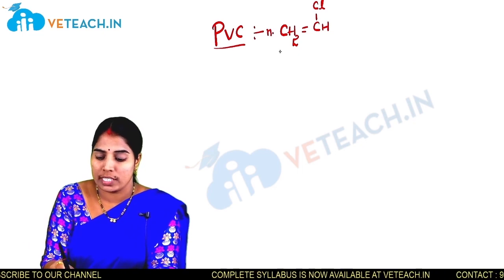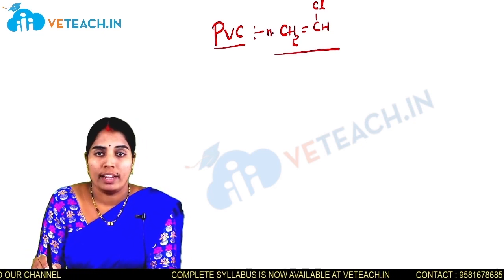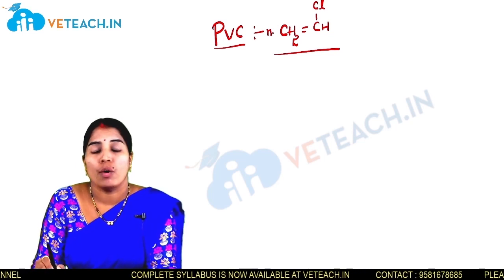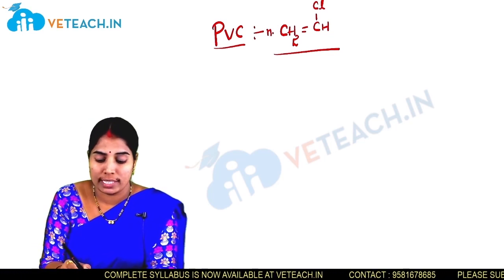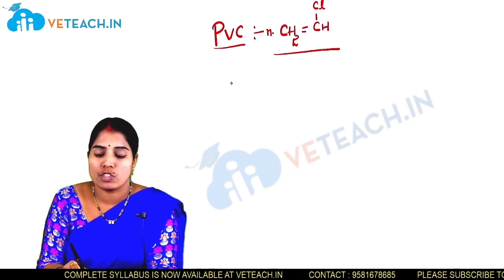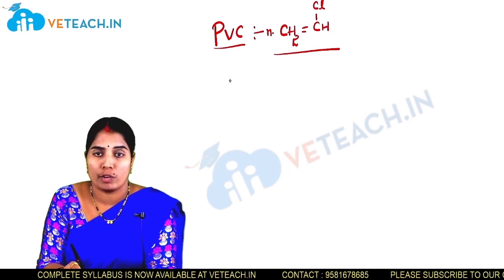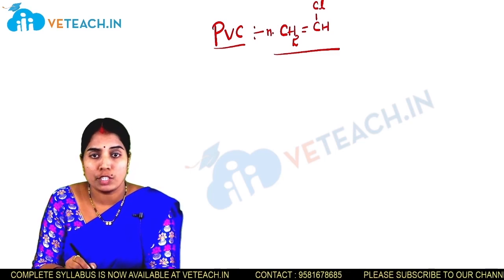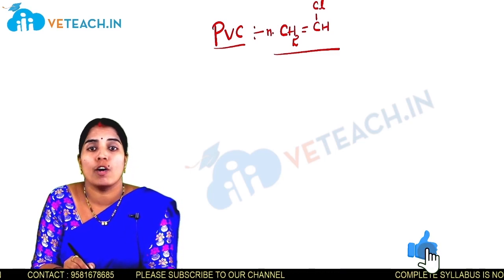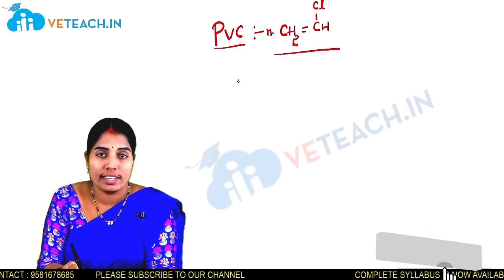This is the general structure of polyvinyl chloride. Now, how to prepare vinyl chloride: the monomer required is acetylene. Vinyl chloride is obtained by treating acetylene with hydrogen chloride at 60 to 80 degrees centigrade in the presence of a metal oxide as a catalyst.